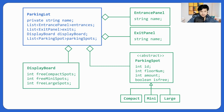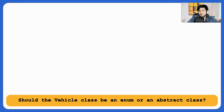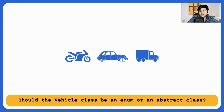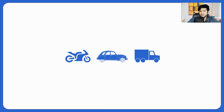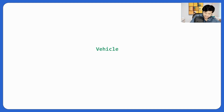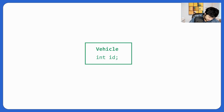We're done with the main entities of parking lot. Vehicle is also there, so let's build it. Should vehicle be an enum since there are different types — car, motorbike, truck? We've seen why we don't prefer enums, so we'll go ahead with an abstract class. Each vehicle will have a separate plate number or ID. We'll extend it for Car, Motorbike, and Truck.